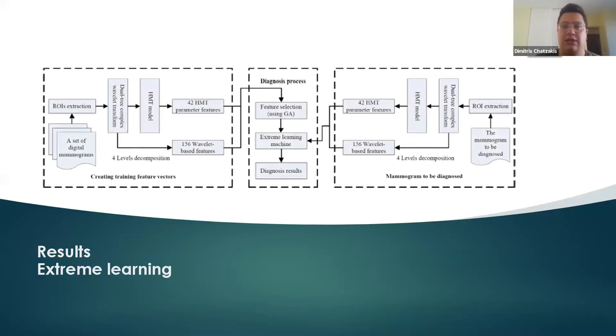The first example has included the extreme learning machine. How it starts is that you have a mammogram, you extract a region of interest, and you parse it through a dual tree complex wavelet transformation, which is basically a transformation like a Fourier transform, but instead of cosines and sines, it's a more complex mathematical feature.